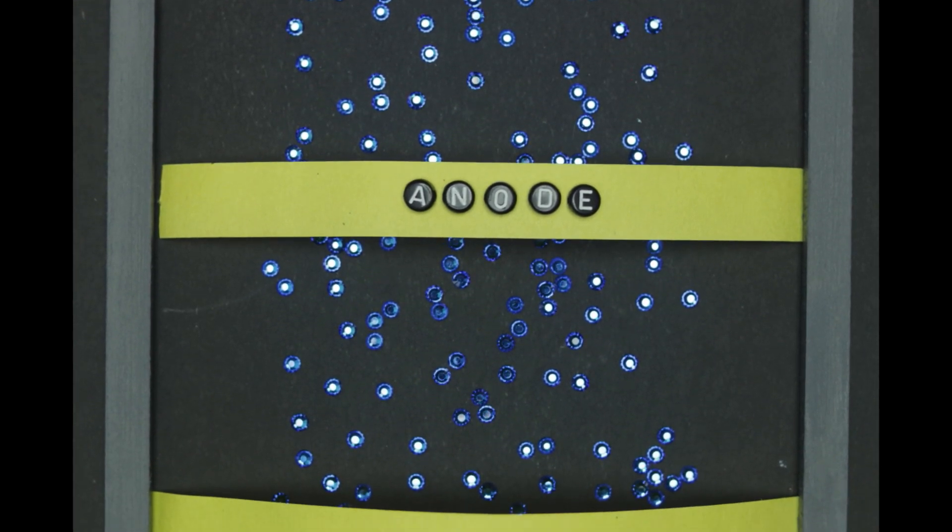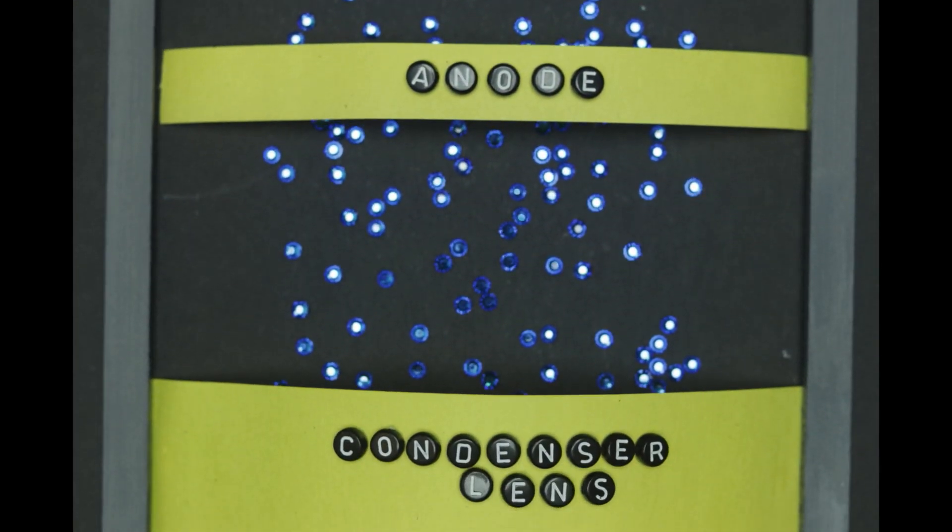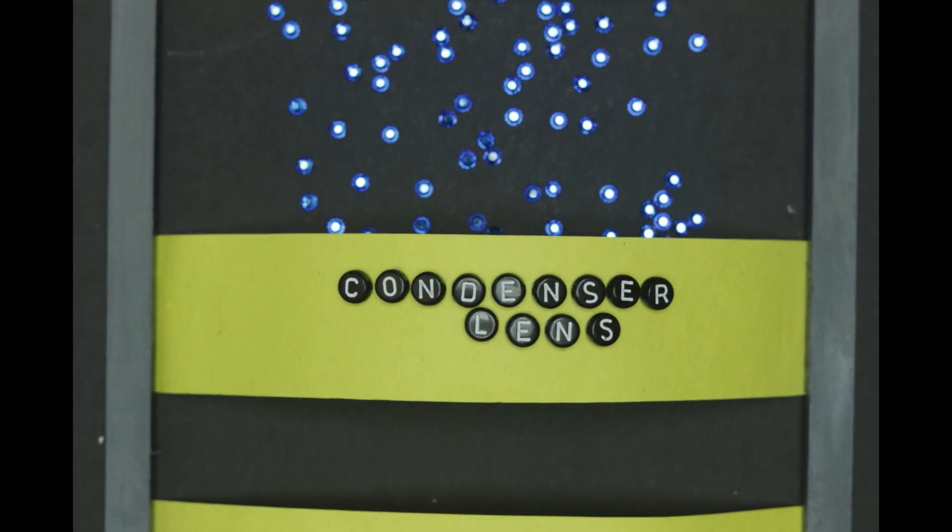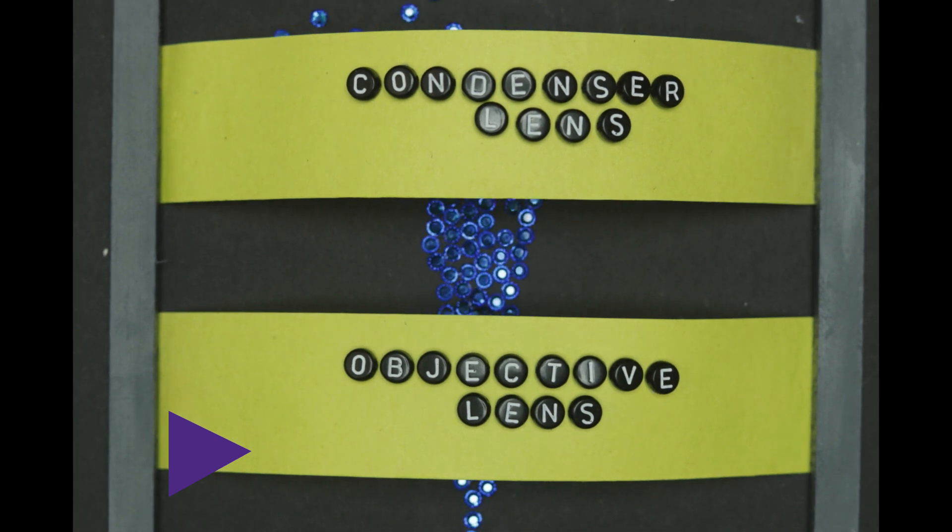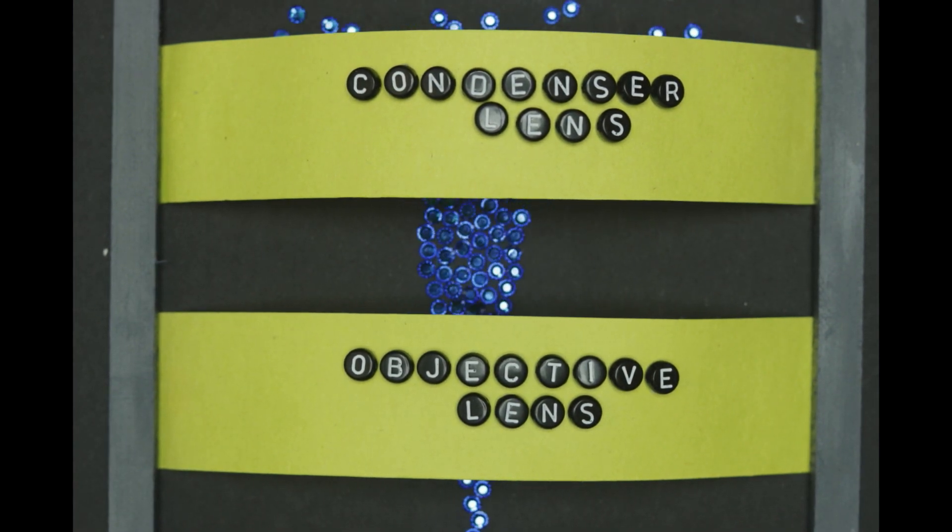There are two main lenses found in the column. The first is the condenser lens and the second is the objective lens. These lenses further pack the electrons together to form a focused electron beam that hits the specimen inside the specimen chamber.